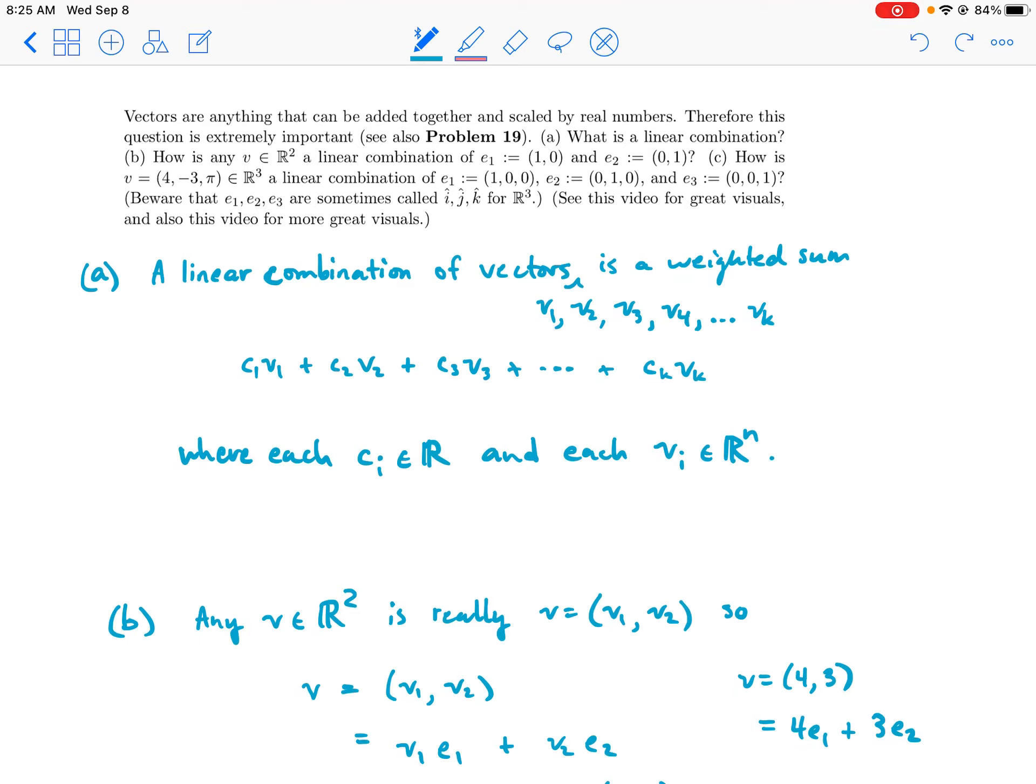And then another way to write this is you could just say the sum of c_i·v_i. This is sort of like a shorthand for this. If you don't want to write this entire thing out, you could just write it like this. And then if you wanted to be more precise, like how many terms are in the sum.